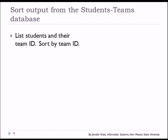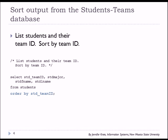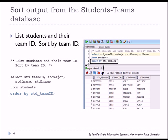We're going to sort output from the student teams database. We're going to list students and their team ID and sort by team ID. Here is our example SQL statement. Select the columns ID, major, first name, and last name from the students table, and we're adding ORDER BY and listing the column we want to do our sort on.